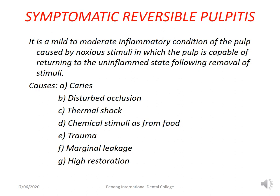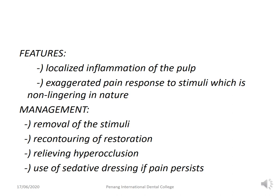The first condition among pre-treatment emergencies is symptomatic reversible pulpitis. Causes include caries, disturbed occlusion, thermal shock due to heat or cold, chemical stimuli, trauma, marginal leakage within a restoration, or a high restoration. It is important to remember that some patients with a lower pain threshold can also perceive symptomatic reversible pulpitis as an endodontic emergency.